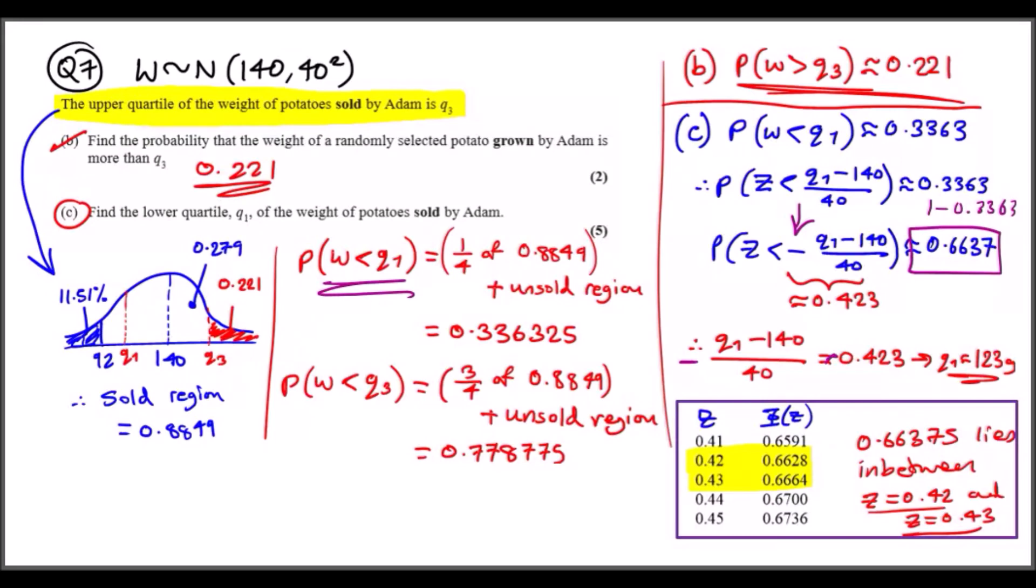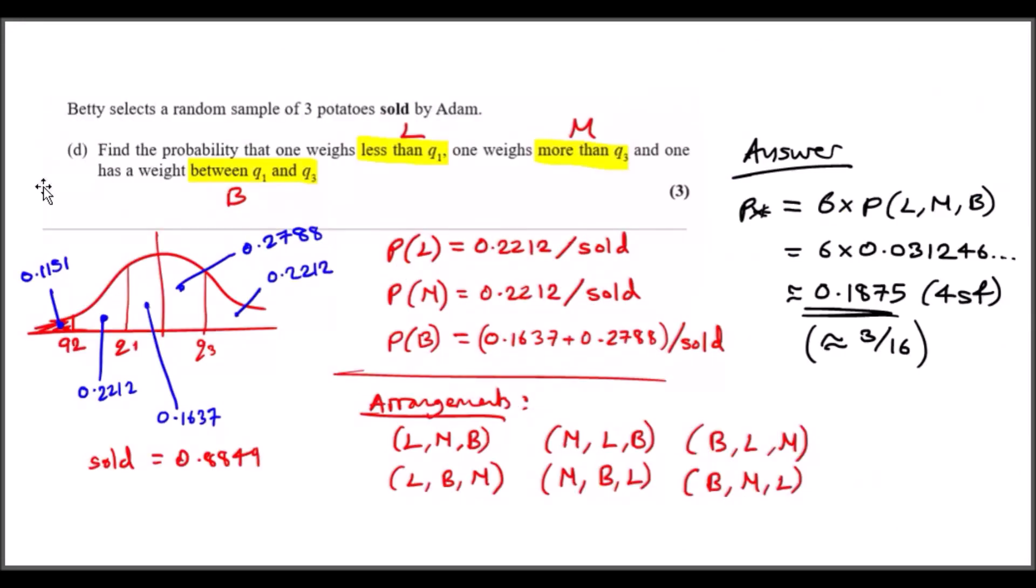Finally, part d: Betty selects a random sample of three potatoes sold by Adam. Again, sold, so we're looking at the white region from the bell curve. You can see that I fully updated this bell curve. We've got probability between Q1 and the mean, between 92 and Q1, so we found this all from the previous question. You can just subtract and you get every value. Remember the left side equals 0.5, so does the right side.